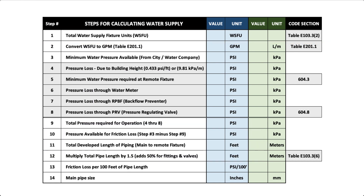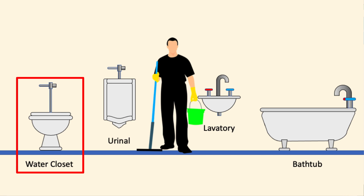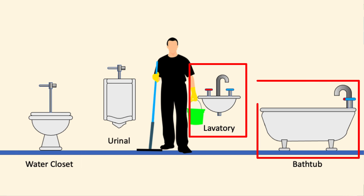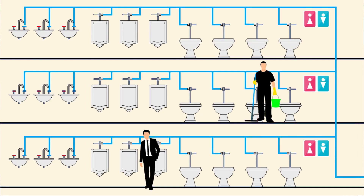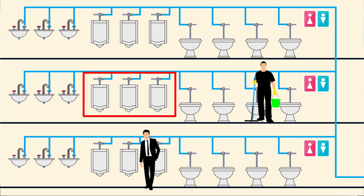Identify the different types of plumbing fixtures that will be connected to the water supply system. Examples of common fixtures include toilets, sinks, bathtubs, showers, dishwashers, and washing machines. We'll use a three-story office building for our example. Here we show that each floor has four water closets, three urinals, and three lavatories.